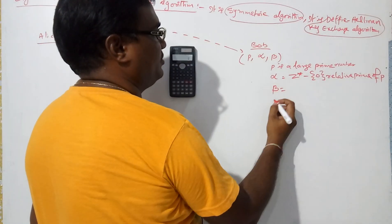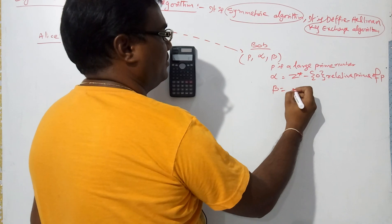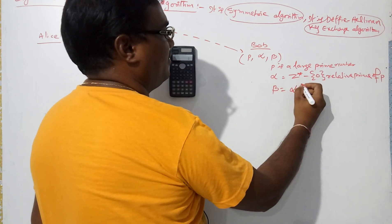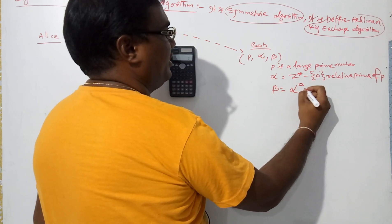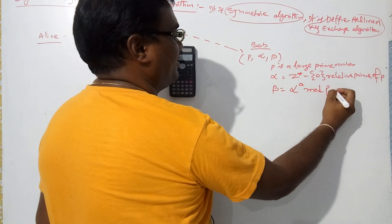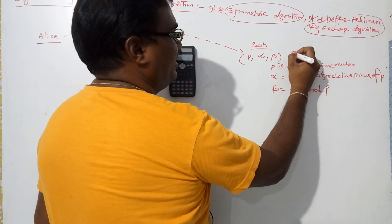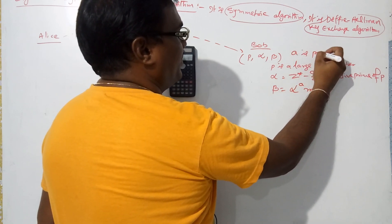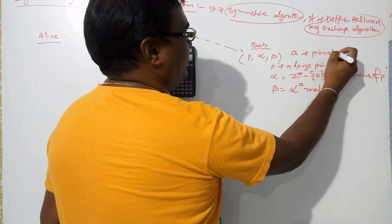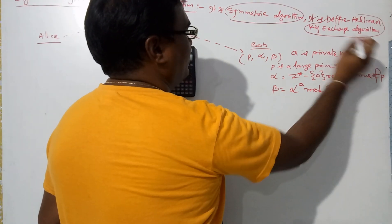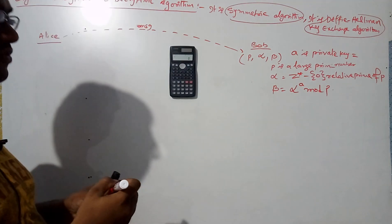Beta is equal to alpha to the power a mod p. Here, a is the private key of Bob. A is the private key of Bob.